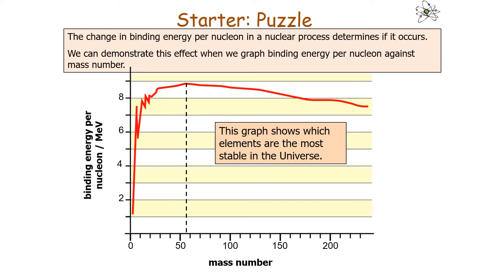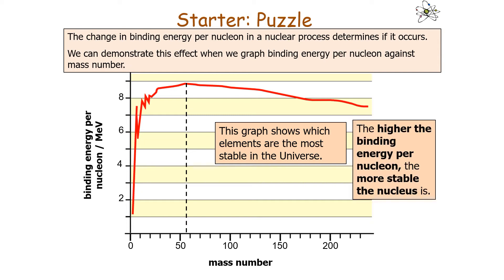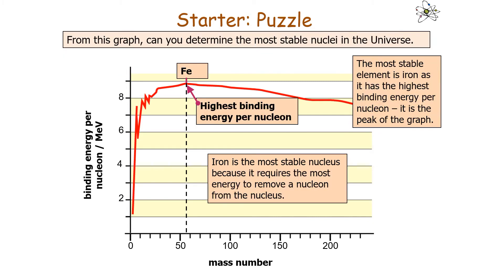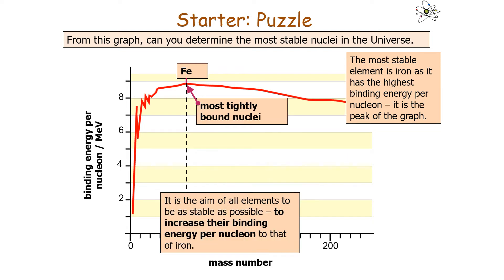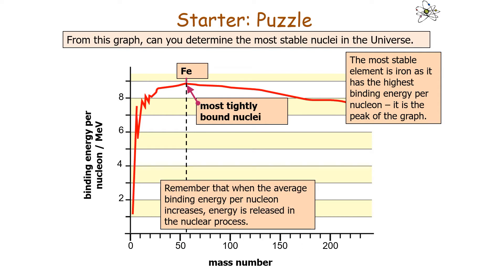The change in binding energy per nucleon in a nuclear process determines if it occurs. We can demonstrate this when we graph the binding energy per nucleon against the mass number. This graph shows the elements that are most stable in the universe — the higher the binding energy per nucleon, the more stable the nucleus. Iron is the most stable nucleus because it requires the most energy to remove a nucleon; it has the highest binding energy per nucleon. So it is the aim of all elements to increase their binding energy per nucleon, because when it increases, energy is released in the nuclear process.